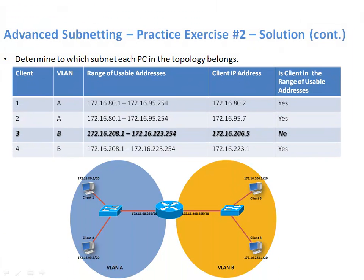Now we know the subnets for VLAN-A and VLAN-B. On screen I've written out the range of usable addresses for each. Checking which client IP address doesn't correspond: client 3 over in VLAN-B has an IP address of 172.16.206.5/20, and that's not in the range of usable addresses for VLAN-B. So that's the client with the incorrect IP address.